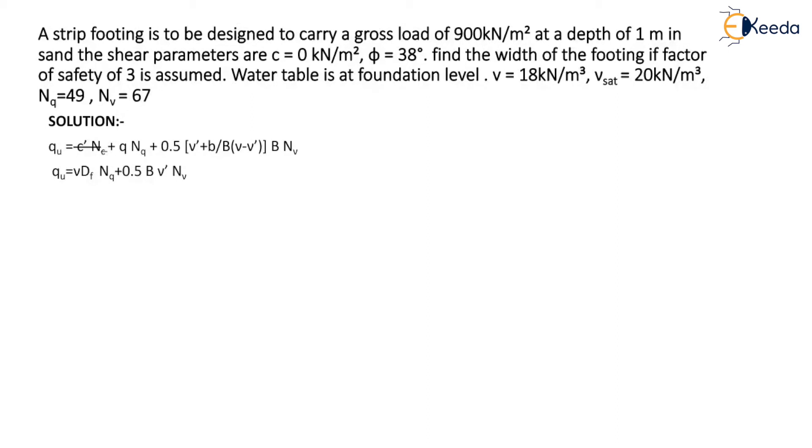Now net ultimate bearing capacity of the foundation will be q N u equal to q u minus gamma df that is 325 minus 18 x 1 which is equal to 307 kN per meter square. Net safe pressure is equal to q Ns equal to q N u divided by f which is equal to 307 divided by 3 that is 102.3 kN per meter square.